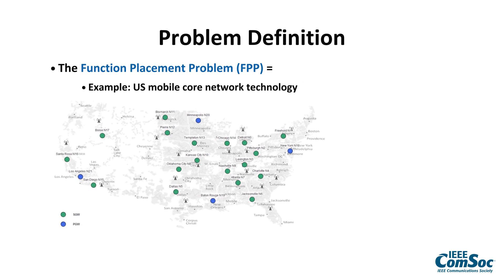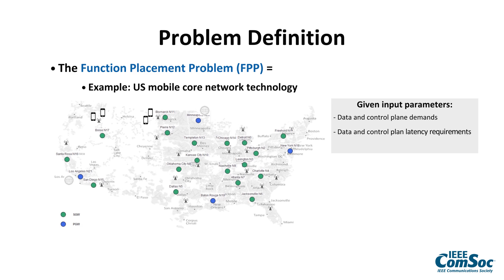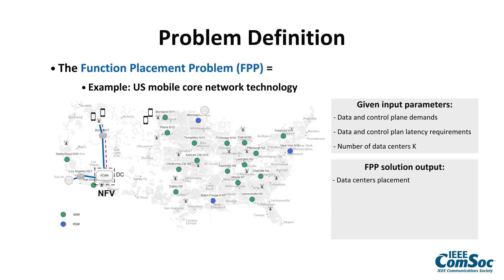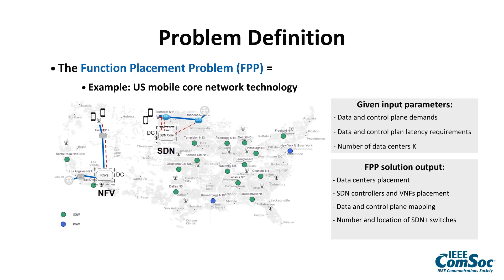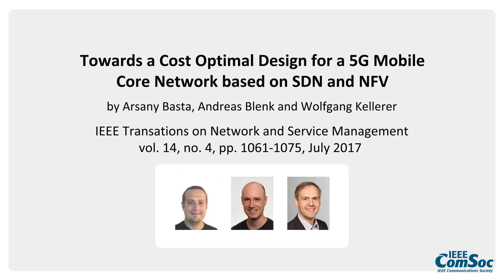As an example, looking at this mobile core network topology in the US, we can see the distribution of S-Gateways in green and P-Gateways in blue. The Function Placement Problem requires the following input parameters: the data and control plane network flows, the data and control plane latency requirements, and the number of data centers involved. As output, it provides the optimal cloud locations, which parts of the network adopt SDN versus NFV, the placement of SDN controllers and virtual network functions, the data and control plane mapping, and the optimal design cost based on the target objectives.